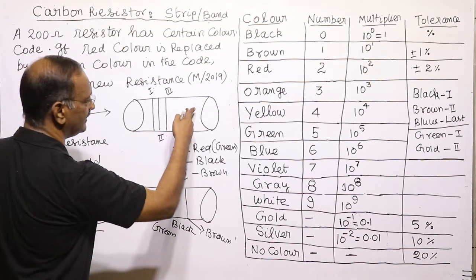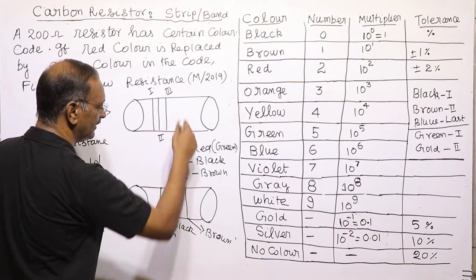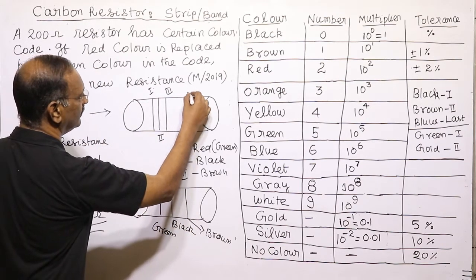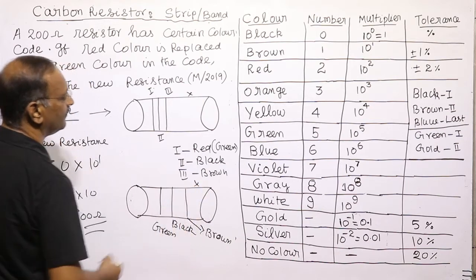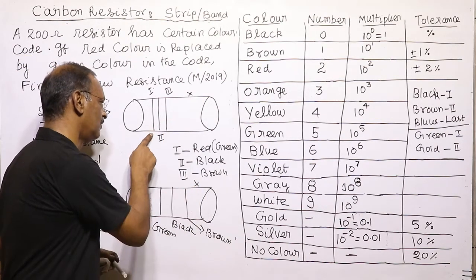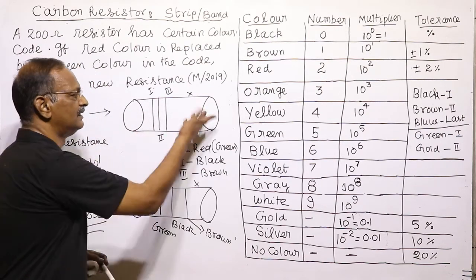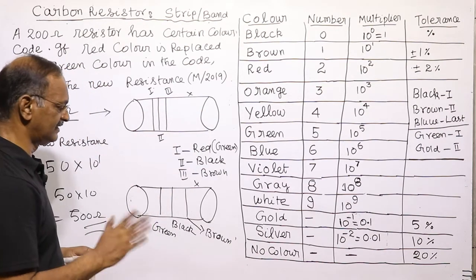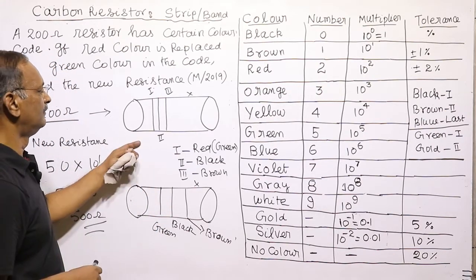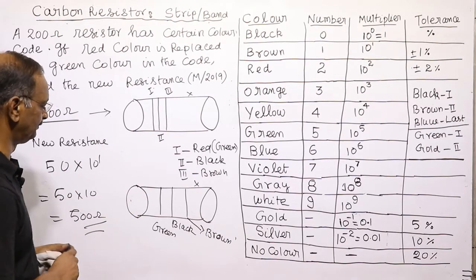The tolerance has not been mentioned, so whatever tolerance the original resistor had, the new one has the same tolerance. Since only the first band was replaced and nothing else was changed, the tolerance remains the same for both the initial 200 ohm and the final 500 ohm resistor.